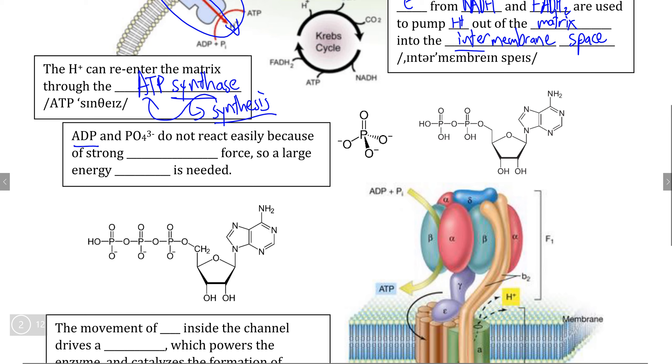Now, ADP, the precursor molecule to ATP, where we need to add a phosphate onto, this reaction does not happen very easily because of the extremely strong repulsion that a phosphate with a negative three charge has being repulsed by two phosphates that are already present.